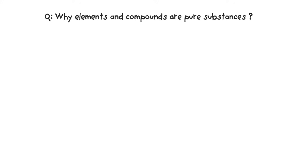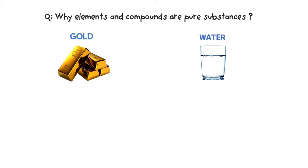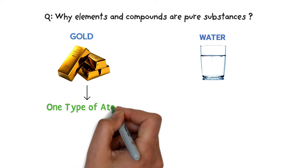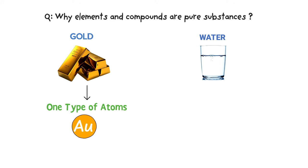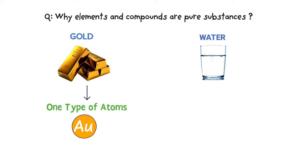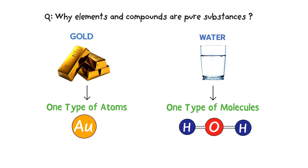Finally, here is a bonus question: why are elements and compounds pure substances? Consider a sheet of gold — the microscopic description reveals that it is made from only one type of gold atoms (Au) and there is no other atom present, so an element is a pure substance. Similarly, water in a glass is made from only one type of molecules, H₂O, and there is no other molecule present — so every compound is also a pure substance.